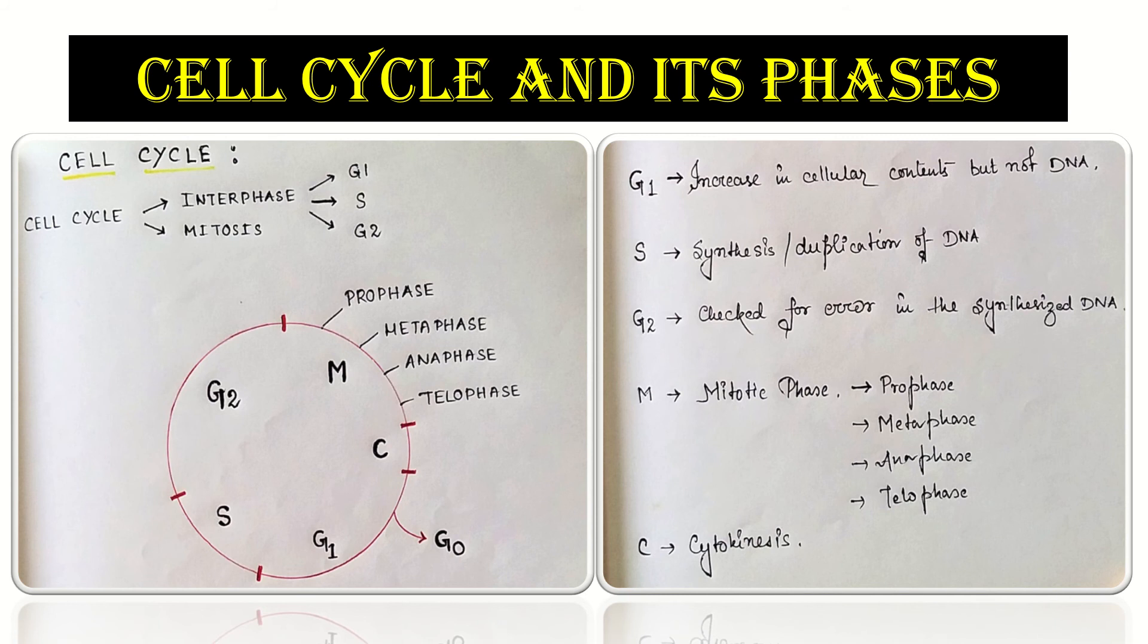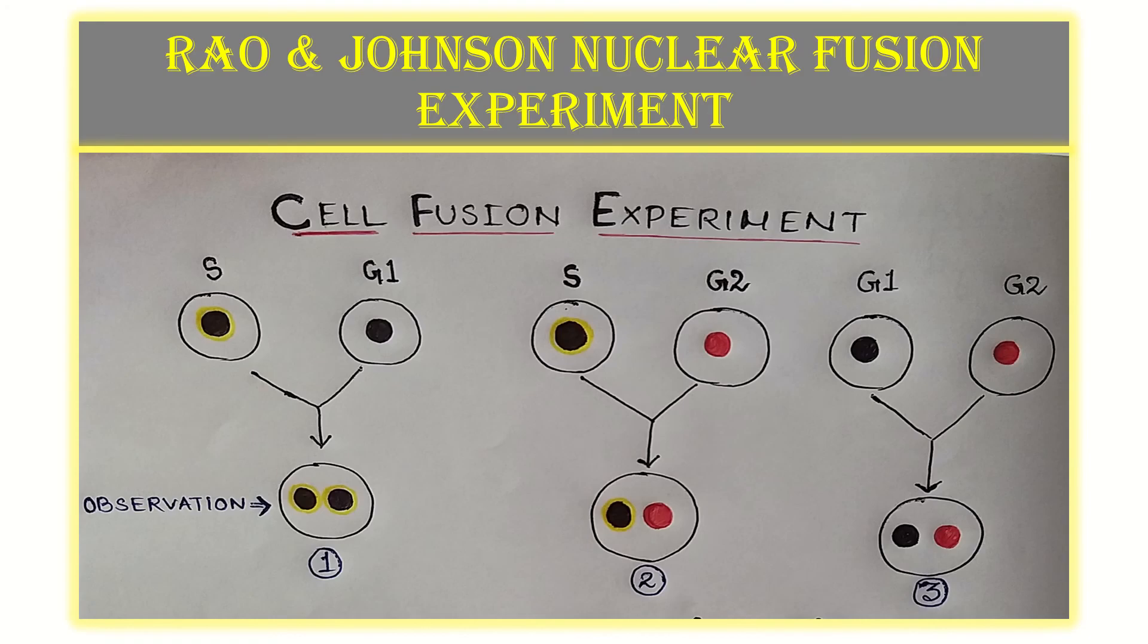Then comes the mitotic phase. In mitotic phase we get to see four phases: the prophase, metaphase, anaphase and finally the telophase which is then followed by cytokinesis. Now we will come to the main topic of discussion.